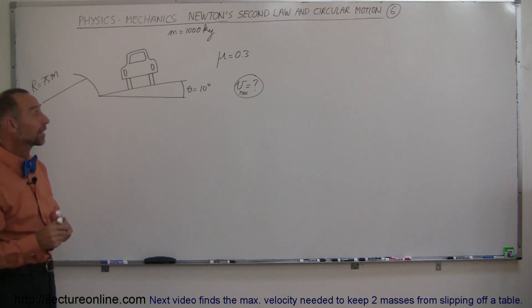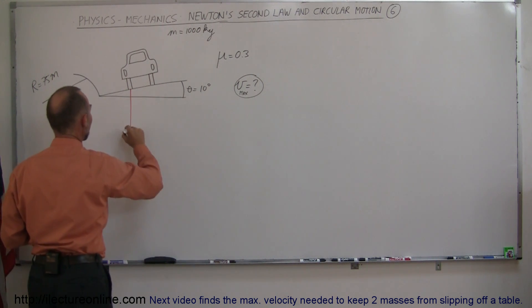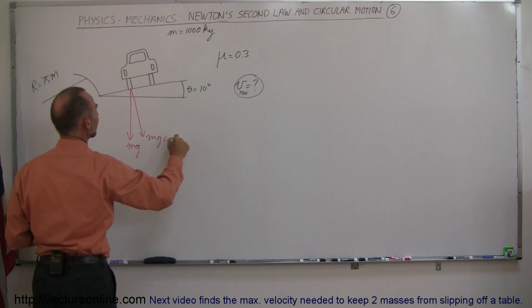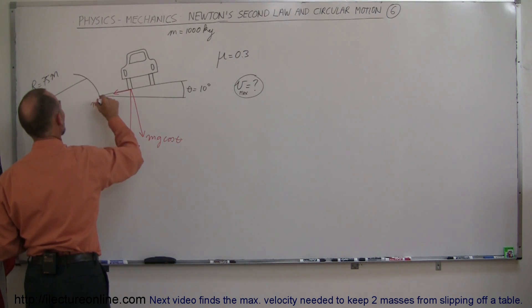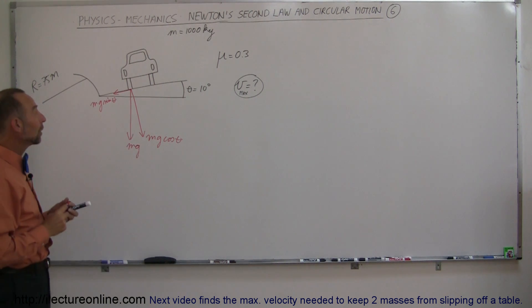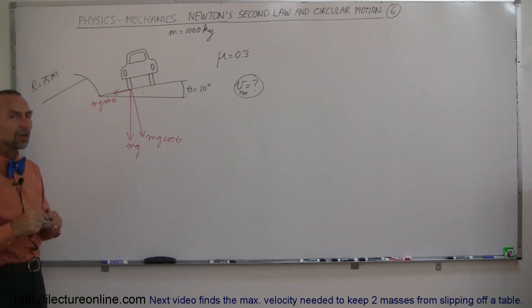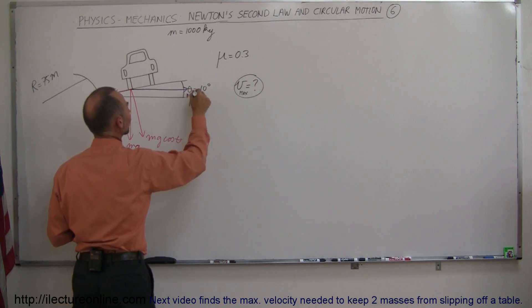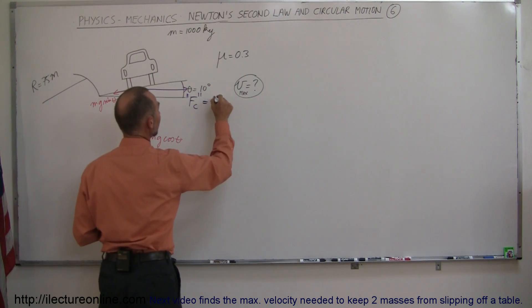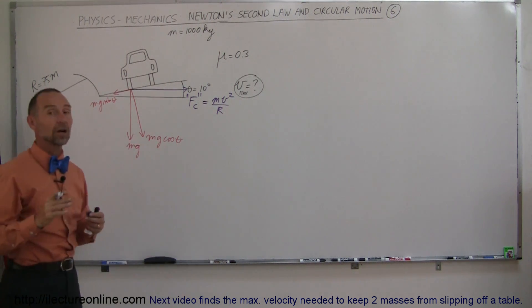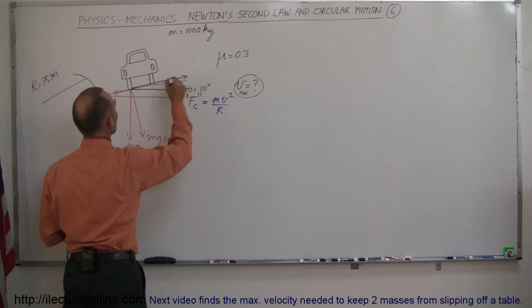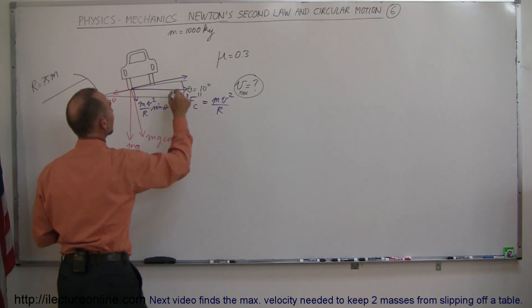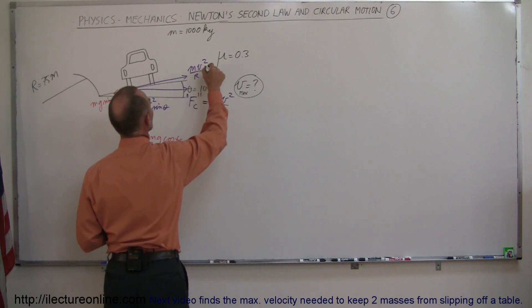Let's identify all the forces acting on the car. The easy one is the weight, mg. Since it's on an incline, there's a perpendicular component mg cosine theta and a horizontal component mg sine theta. Because of the circular motion, there's also the centrifugal force trying to push the car to the outside — that's F_C, which has the same equation as centripetal force: mv²/R. On the incline, this has a parallel component mv²/R times sine theta and a perpendicular component mv²/R times cosine theta.